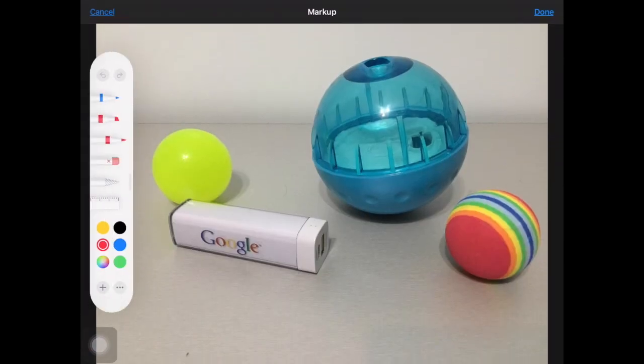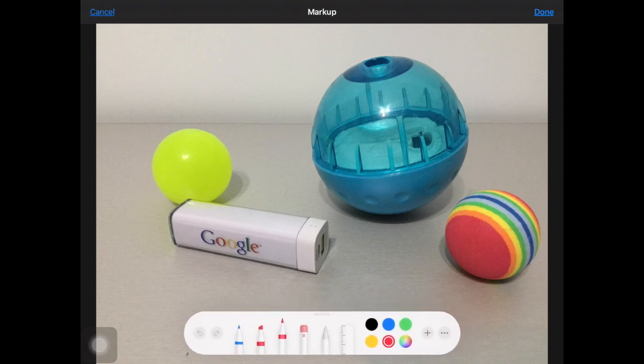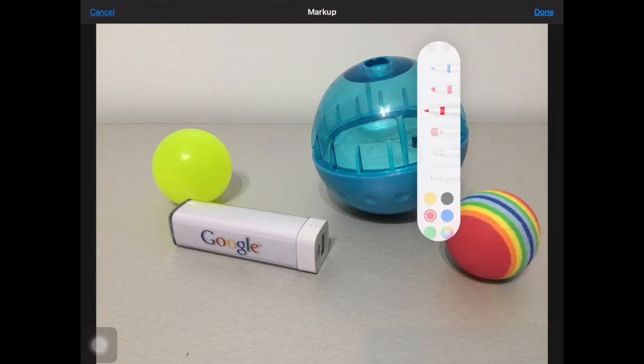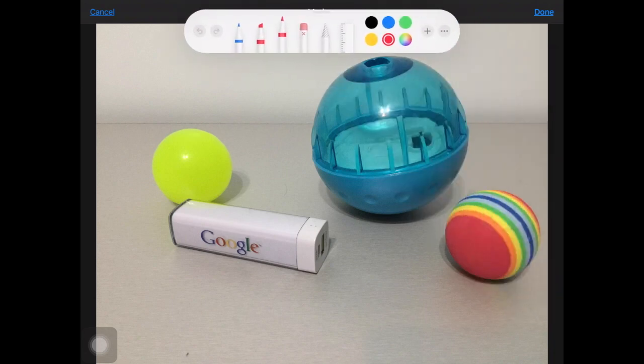This is going to bring up these tools along the side of my iPad. I can grab this little handle and move this set of tools around my screen wherever it's most convenient for me depending on what I'm trying to write on and where I want to put that writing. Now I've got different pencils and pens and highlighters here and an eraser and different colors of ink.